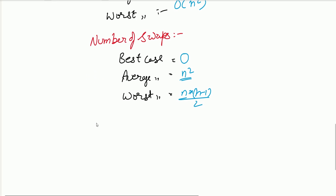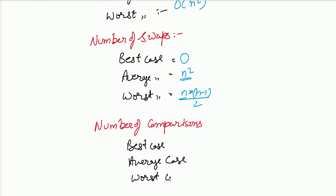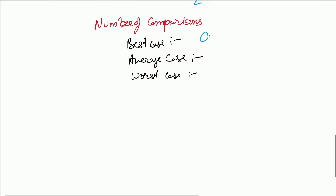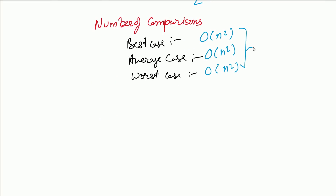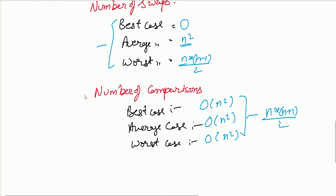The next comparison metric is the number of comparisons — how many times two elements are compared, i.e., how many times the if condition runs. This is O(n²) in the best, average, and worst cases. To be more precise, it is n(n+1)/2. This is how you compare sorting algorithms: on the basis of time complexity, number of swaps, or number of comparisons.